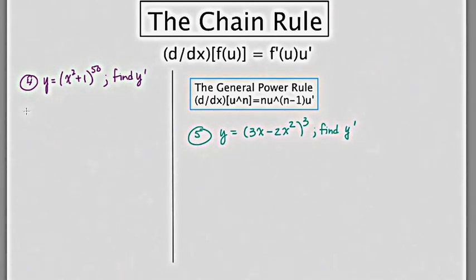We're going to start by decomposing the function, and we're going to let y equal u to the 50th, and we're going to let u, the specific inner function, be x squared plus 1.